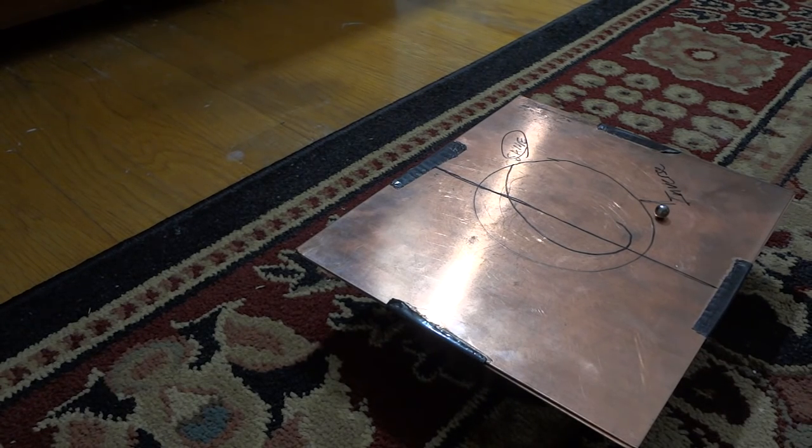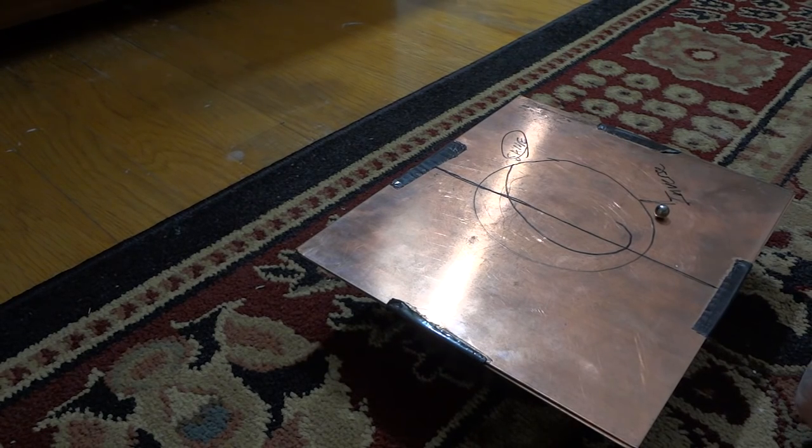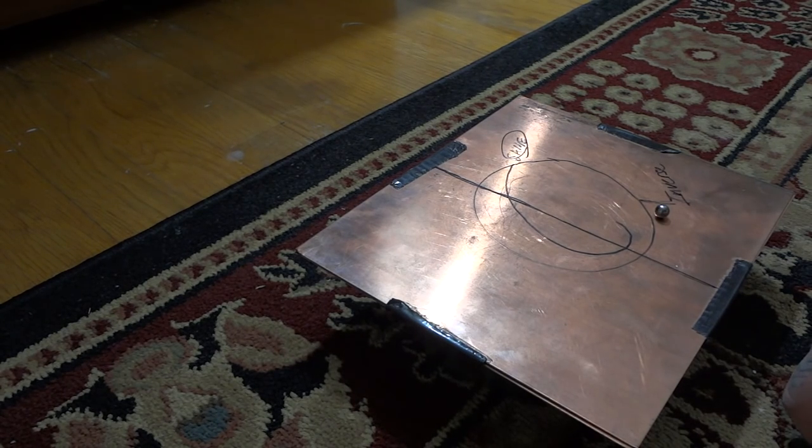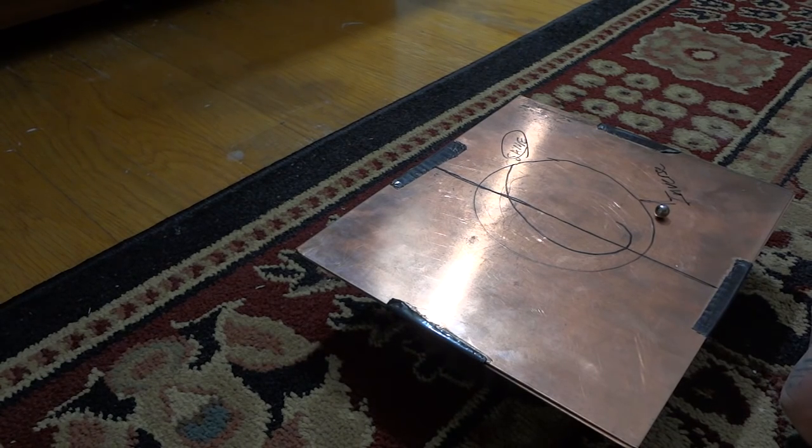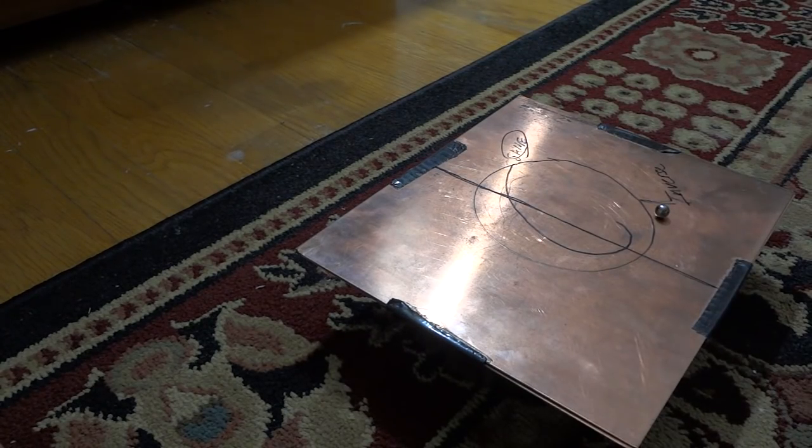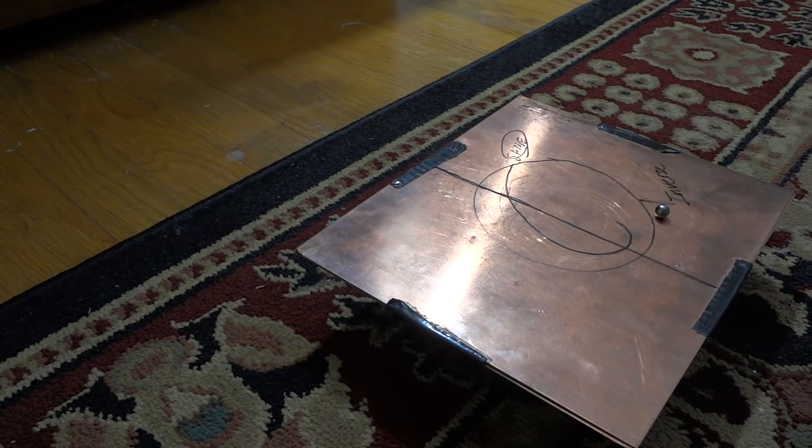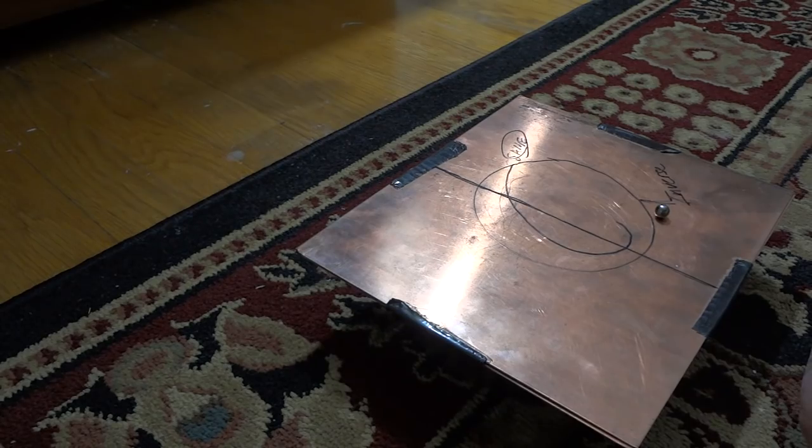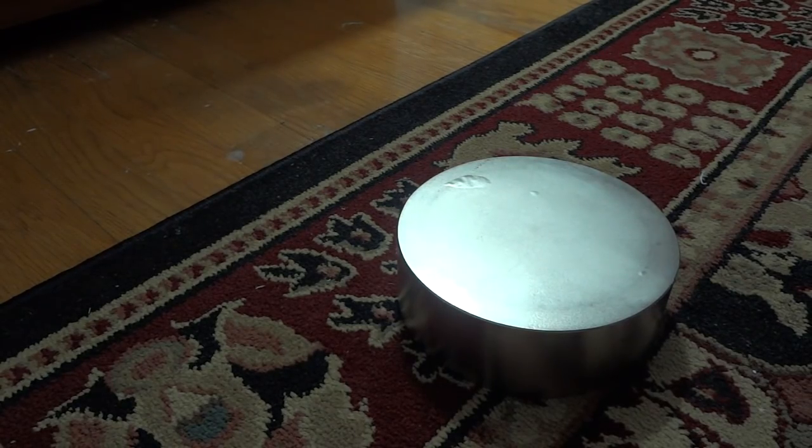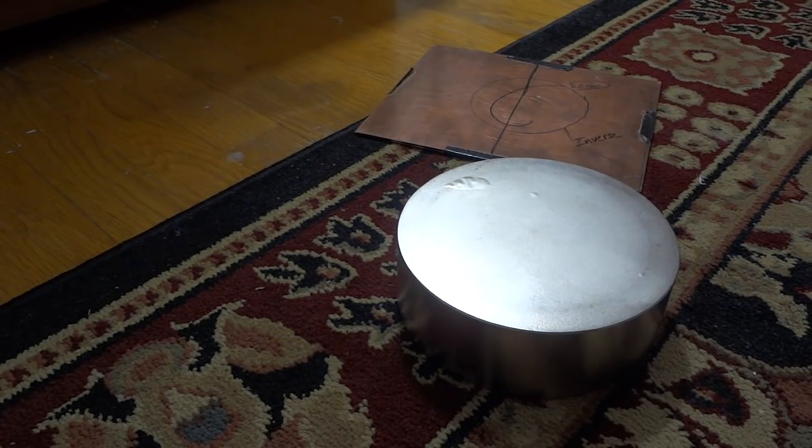Academia is one asshole parroting what another parrot before him was told to parrot. That's 99% of academia. On the side of each and every magnet is a vortex, because that's the only way Mother Nature works. A vortex. Field coherency.